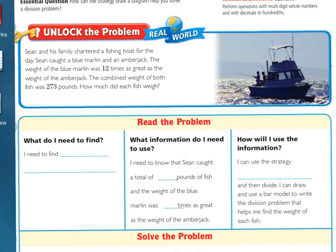This is a word problem that we need to read the problem, answer some questions, make a plan, and then actually solve the problem. First thing that we always do is we underline what we're being asked to find. In this case there is a question mark, so we look for that sentence. It says, how much did each fish weigh? Now we need to circle the important information.